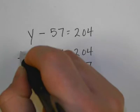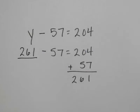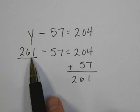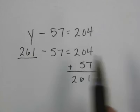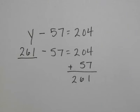So now in my blank I can put 261. Now I need to check to make sure it makes sense. 261 minus 57 would give me 204. Does that make sense? And the answer is yes, it does make sense.